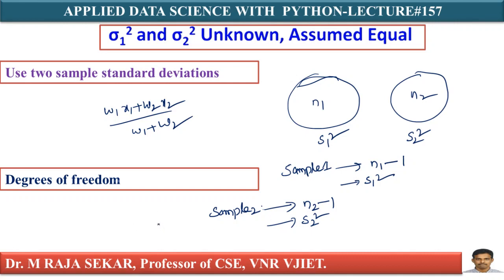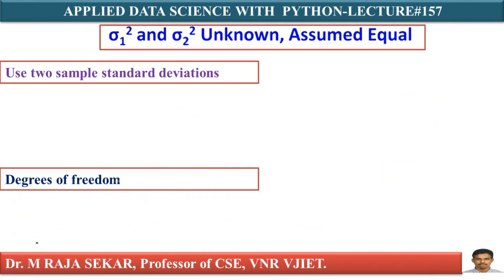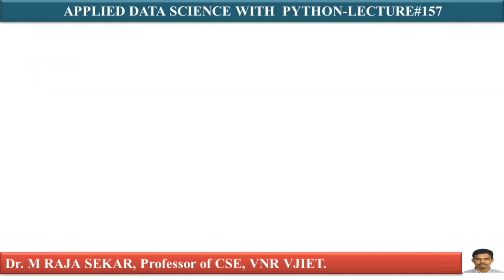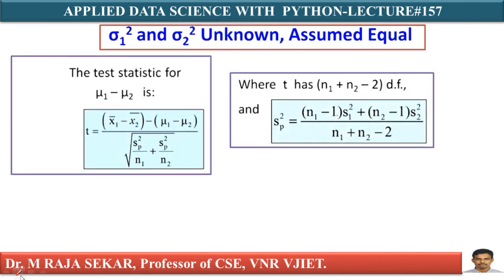The pooled variance SP square equals: (N1 minus 1)·S1² + (N2 minus 1)·S2², divided by (N1 minus 1) + (N2 minus 1), which equals N1 + N2 minus 2. We are treating degrees of freedom as weights in computing this pooled (weighted) variance.